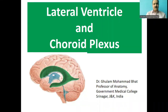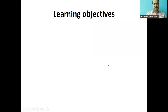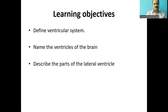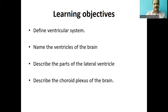Dear students, in this class we are going to discuss the lateral ventricle and the choroid plexus. The learning objectives of this class will be: at the end of the class you should be able to define the ventricular system, name the ventricles of the brain, describe the parts of the lateral ventricle, and describe the choroid plexus of the brain.